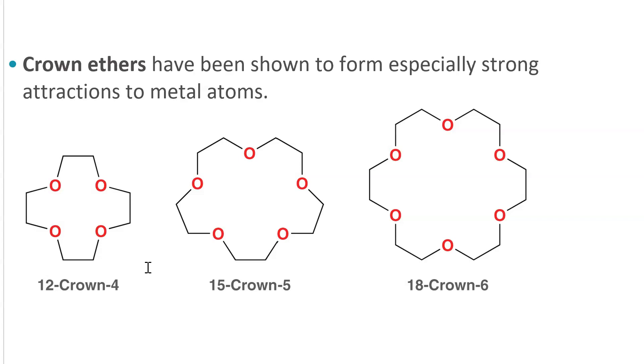So 12-crown-4 is a small crown ether. If you go to 5 oxygens, you now have added 1 oxygen and 1 ethyl group, so it's 15-crown-5. 6 oxygens is 18-crown-6.